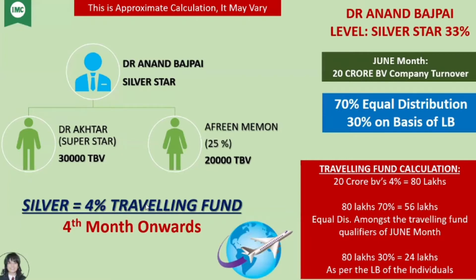The silver comes from 4% of the travel fund from the company turnover. The 4% of the travel fund comes from the company turnover. For example, we are talking about June month. In that month, the company turnover was 20 crores BV. This is an example. It could be 15 crores, 30 crores, or 40 crores.